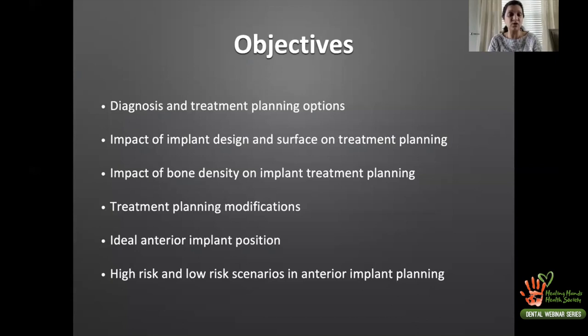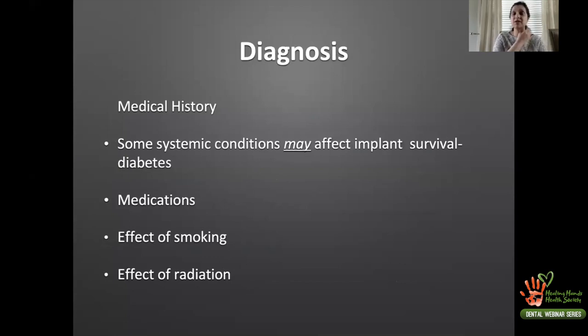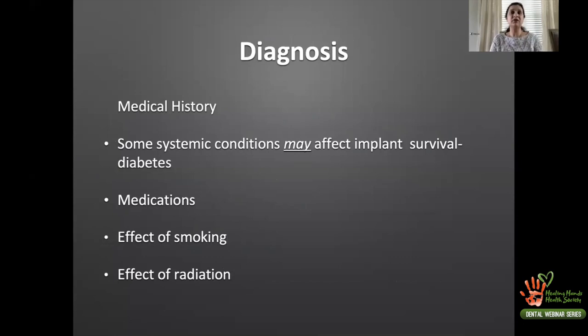When an implant patient comes to our clinic, we begin with proper history taking. For implants, the patient's medical history is important. We have to account for all systemic conditions they may have, and we'll discuss how these systemic conditions affect prognosis both short-term and long-term.